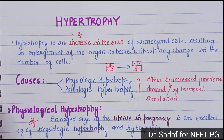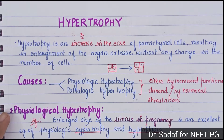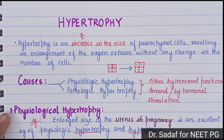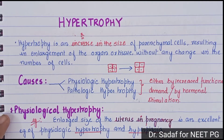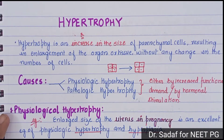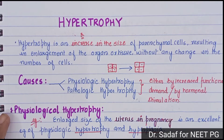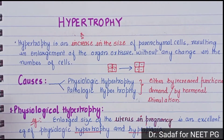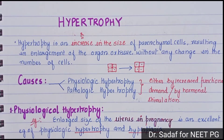So what is hypertrophy? Hypertrophy is an increase in the size of parenchymal cells resulting in enlargement of the organ or tissue, without any change in the number of cells. Hypertrophy is an increase in the size of the parenchymal cell.